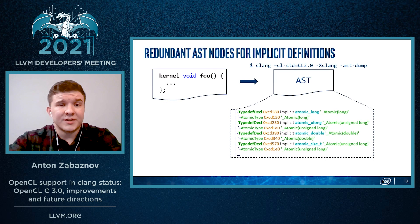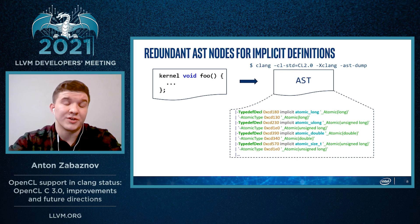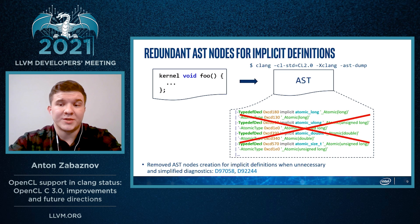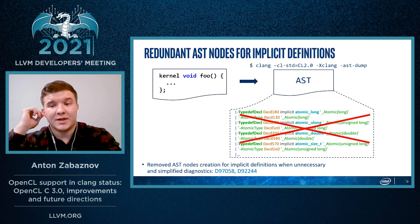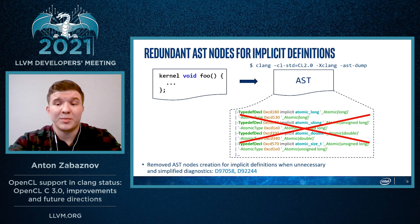As it comes to refactoring, processing of implicit type definitions was simplified. For example, AST nodes for some types which depend on certain features were created regardless of whether the functionality is supported or not. Those nodes don't have to be there as they depend on option settings and are specific to OpenCL optional functionality. Such removal simplifies diagnostics output, avoids confusing users with unknown types, and simplifies the compilation flow by emitting diagnostics as soon as possible.